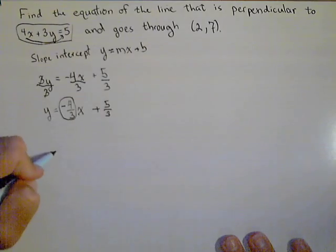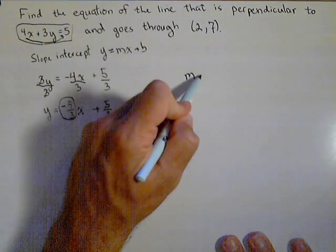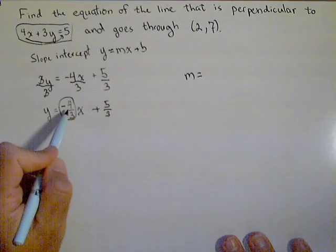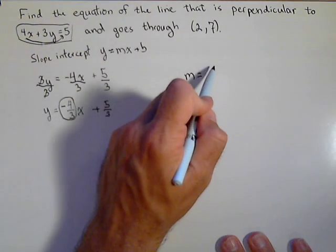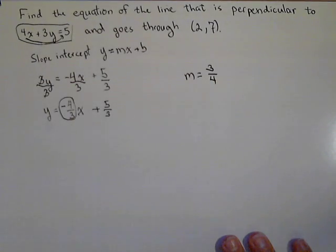Now, the slope of our line is what's called the negative reciprocal. So the slope of our line, what we do is we flip it and we change the sign. So instead of negative 4 thirds, slope of our line is positive 3 fourths.